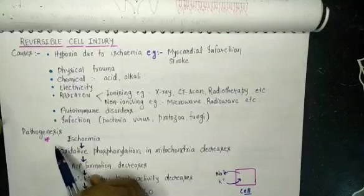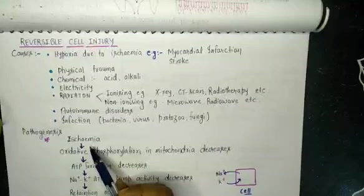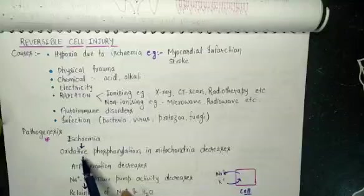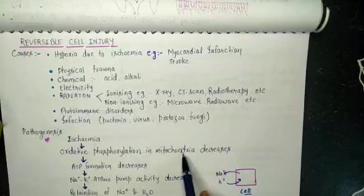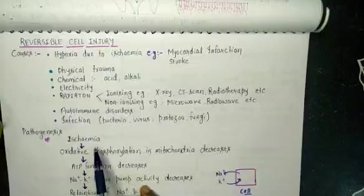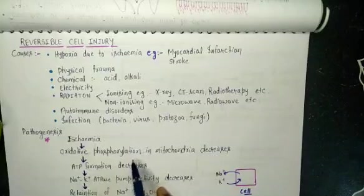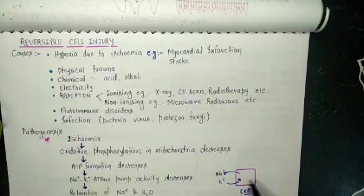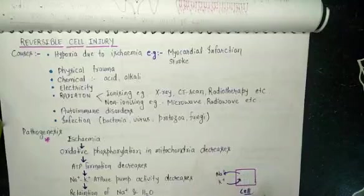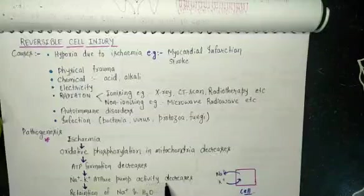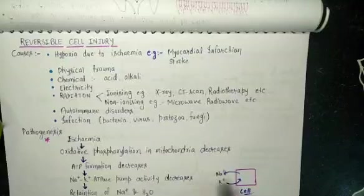Regarding the pathogenesis of reversible injury — the most common cause is hypoxemia or ischemia. Due to ischemia, there is a decrease in oxidative phosphorylation in the mitochondria, because this process requires oxygen. With the absence of oxygen, oxidative phosphorylation decreases, leading to decreased ATP formation. Since ATP is required for the sodium-potassium ATPase pump — sodium out of the cell and potassium into the cell — in the absence of ATP, this pump decreases.